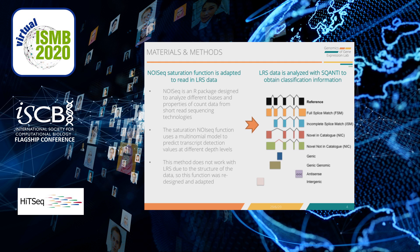In order to study this, we first redesigned the saturation function from the R package NoisIg, designed to analyze properties of count data from short-read sequencing technologies. Its saturation function uses a multinomial model to predict transcript detection values at different depth levels. However, this method does not really work with long-read sequencing due to the structure of the data.